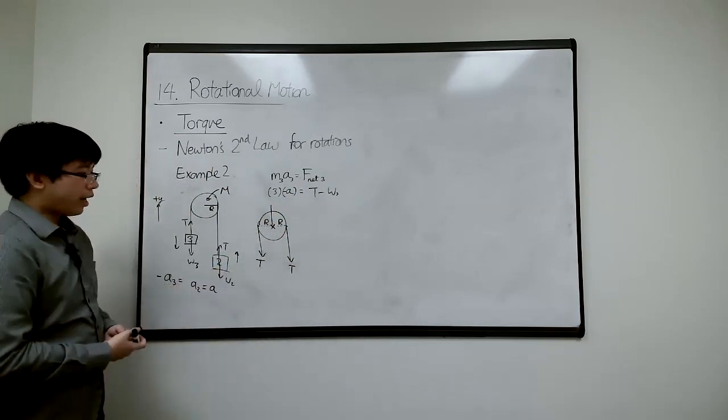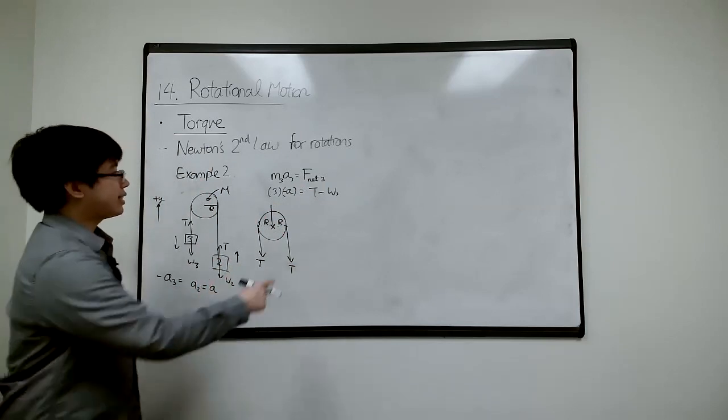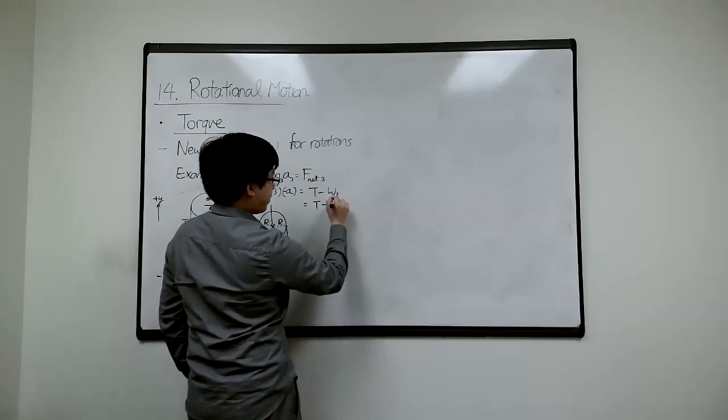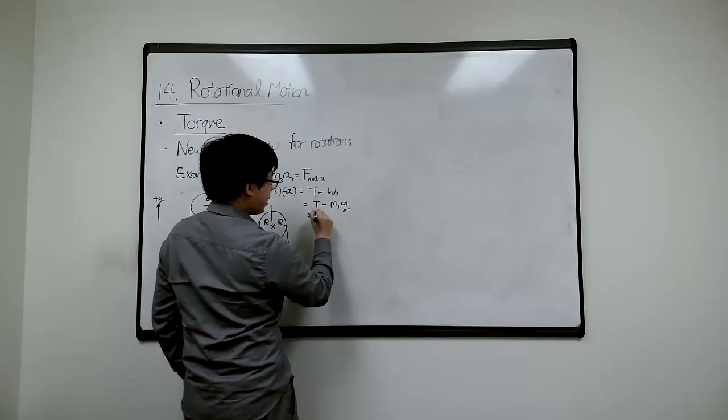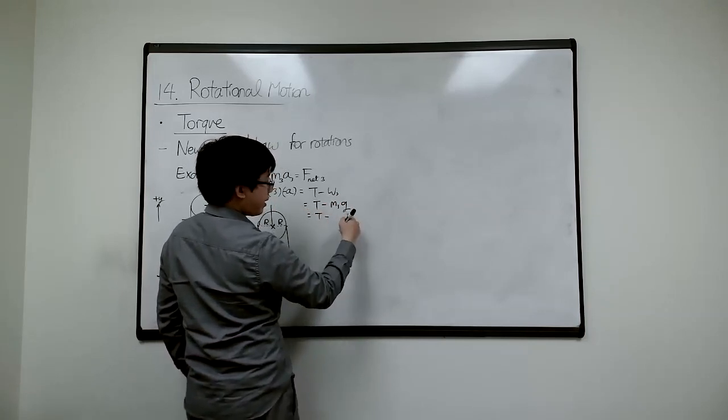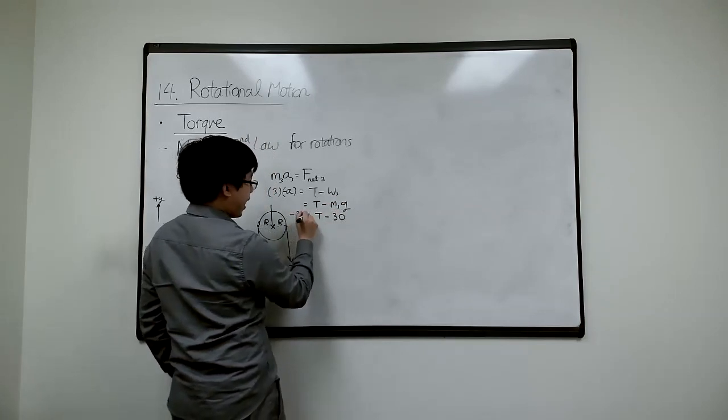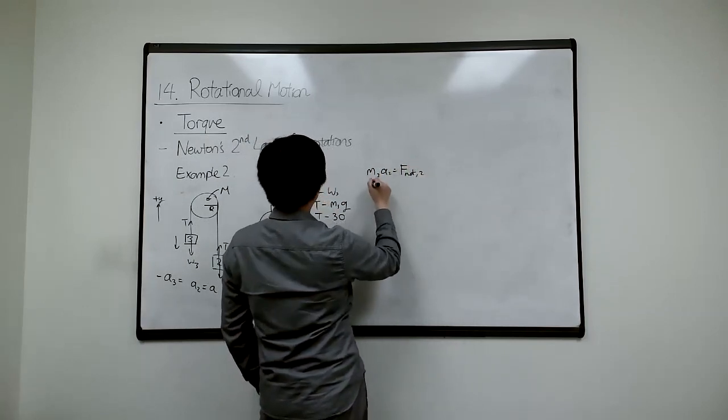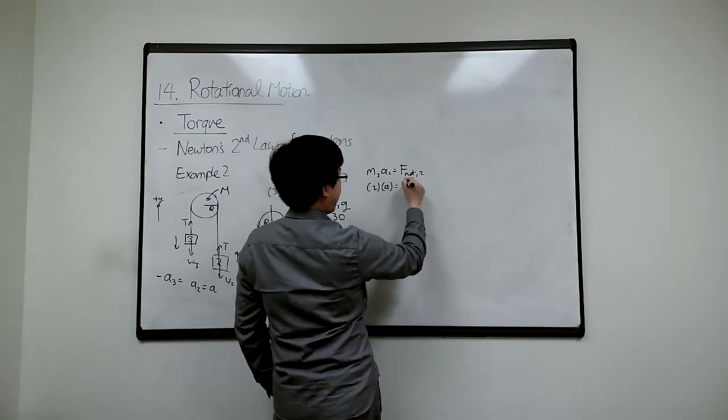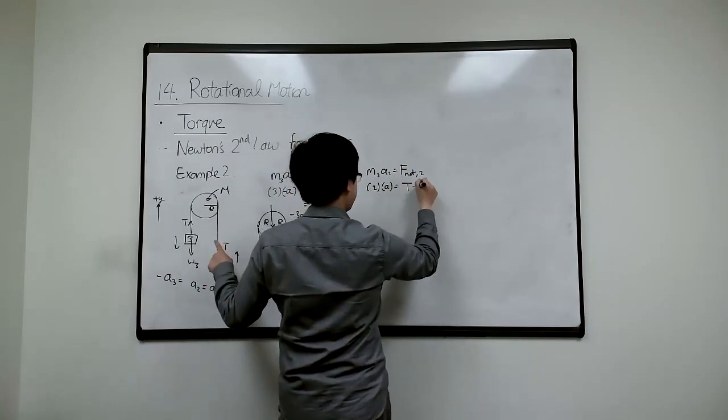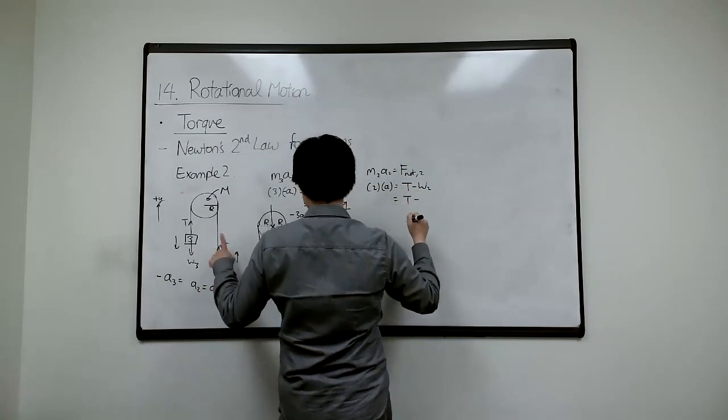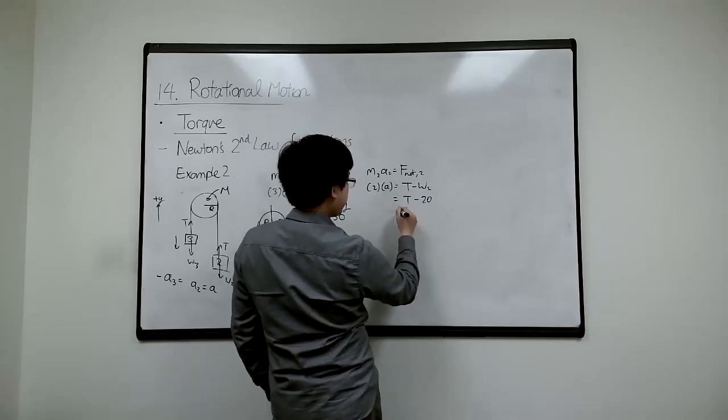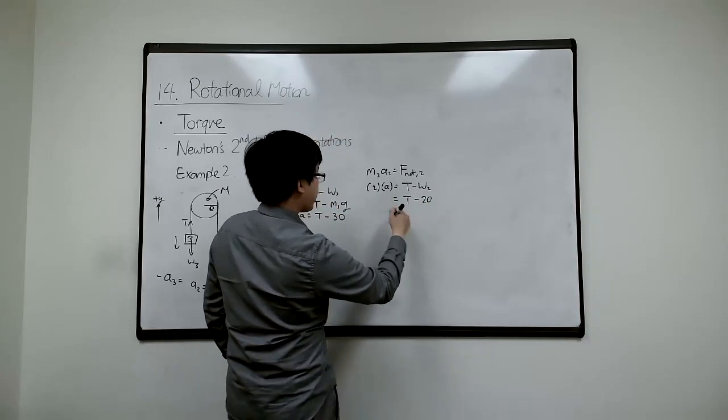So first, you need to know what T is. Let's finish this off. It's minus T. So this is M3G. T minus M3 is 3, so this is 30. Here's minus 3A. And then the other, we have M2A2, F net 2. So here we have 2A, and F net this time is also T minus W2. So I have T minus 20. That's 20, good. So 2A.